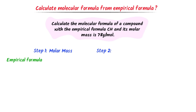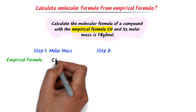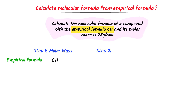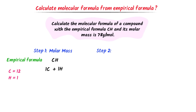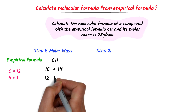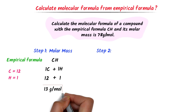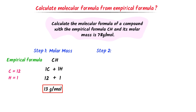Here the empirical formula is CH. There is one atom of carbon and one atom of hydrogen. I add their respective molar masses. The molar mass of carbon is 12 and that of hydrogen is 1. So 12 plus 1 gives 13 gram per mole. The molar mass of CH is 13 gram per mole.